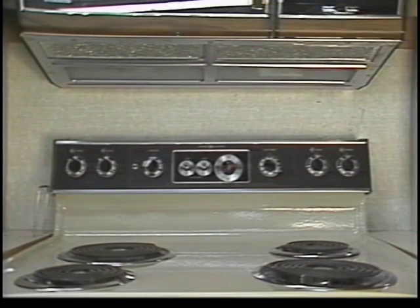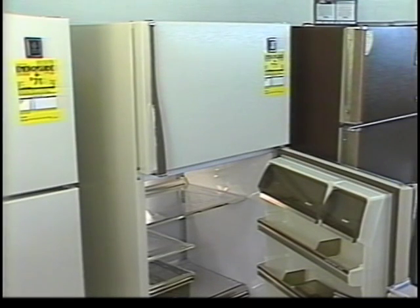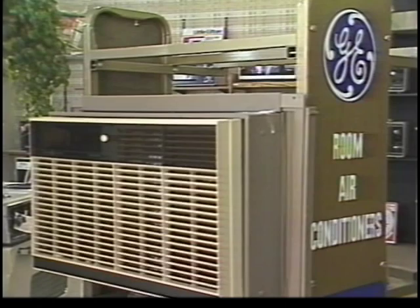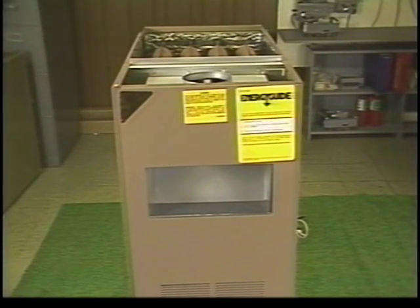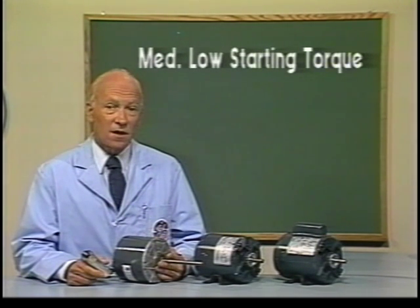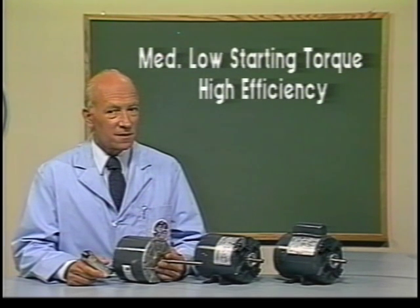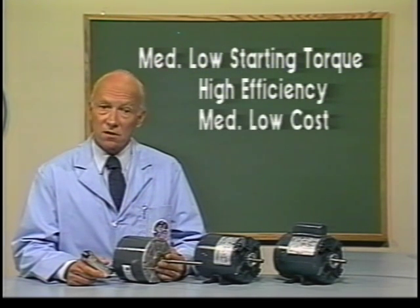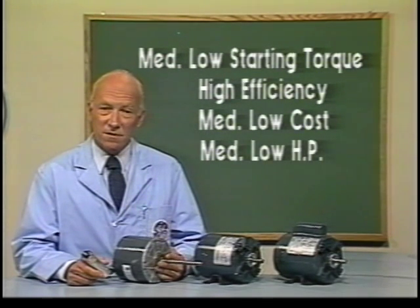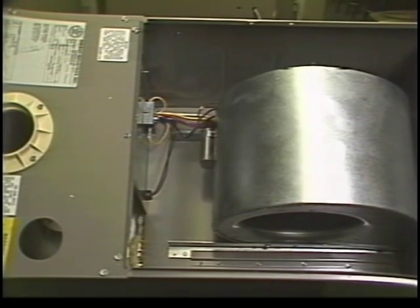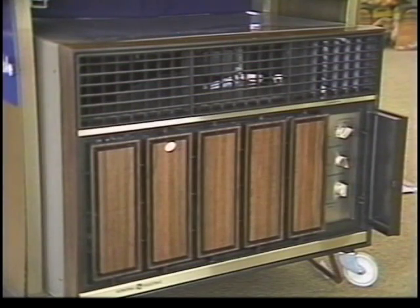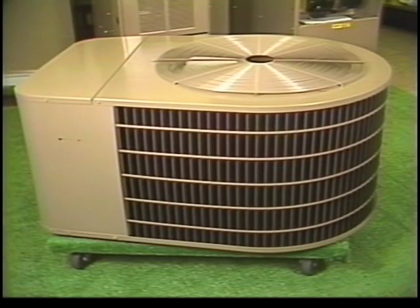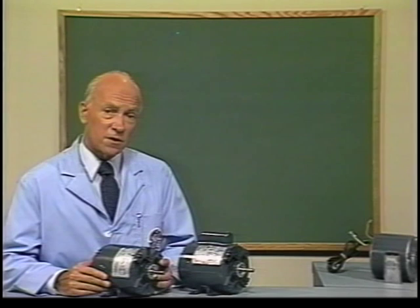The shaded pole motor has low starting torque, low efficiency, low cost, and a low range of horsepower. It is most often found in small vent fan applications and with the small fans found in refrigerators, room air conditioners, and furnaces. The permanent split capacitor motor has medium-low starting torque and the highest efficiency of the four types. The PSC also has medium-low cost and horsepower range.